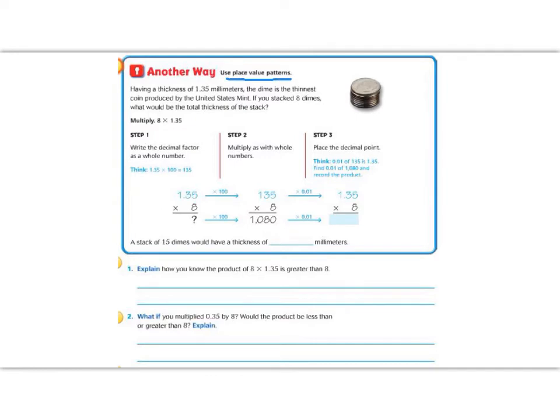So let's read. Having a thickness of 1.35 millimeters, the dime is the thinnest coin produced by the US Mint. If you stacked 8 dimes, what would be the total thickness of the stack?